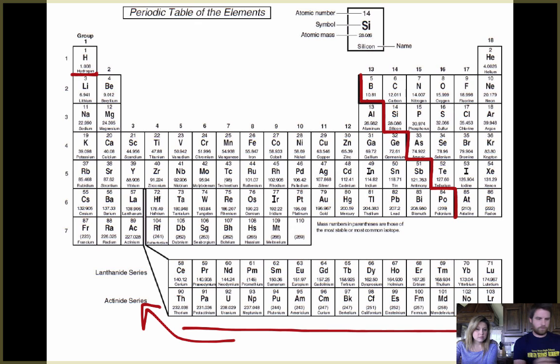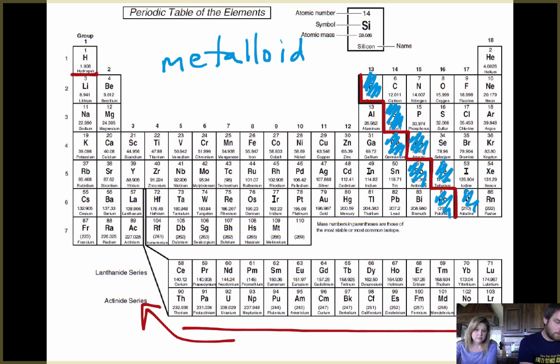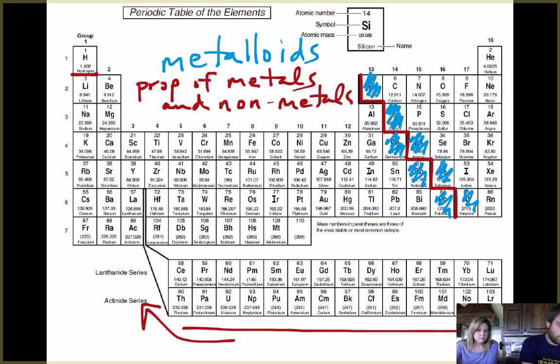So let's start with what is on the staircase because that's a little bit easier to understand. So elements along the staircase are called metalloids. Okay, so that'd be everything that the staircase touches except for aluminum. So these guys right here we call these metalloids and what's special about them? So they have properties of both metals and non-metals. Okay, properties of metals and non-metals. They can't be classified as one or the other.